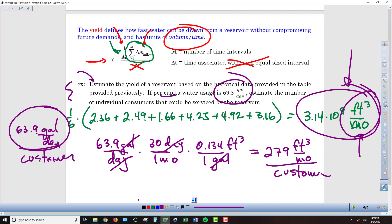And so now, with the yield of 3.14 billion cubic feet, that's what I can draw from my reservoir without depleting it over this six month period of time. If I then divide that by the per customer amount, so basically my cubic feet per month are going to cancel each other out. I've got the customer unit in the bottom of the bottom, so that's going to end up in the numerator. So if I divide those two quantities, I end up with my total number of customers that this reservoir can support.